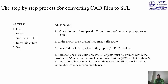You are now ready to go with the STL. For AutoCAD: click Output > Send panel > Export. At the command prompt enter 'export'. In the Export Data dialog box enter a file name. Under File of Type, select Lithography (.STL), then click Save. Select one or more solid objects. All objects must be entirely within the positive XYZ octant of the world coordinate system, because if they are in the negative XYZ coordinates we need to consider all 6 coordinate systems. Using only positive coordinates requires only 3 coordinate systems, which may also reduce the file size. That is, the XYZ coordinates must be greater than 0.